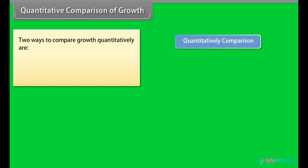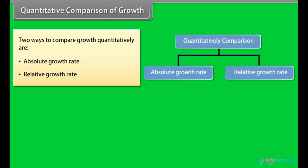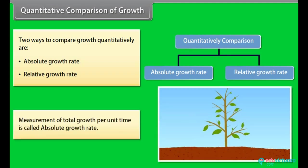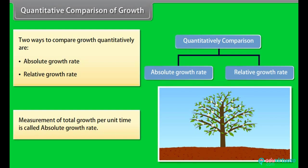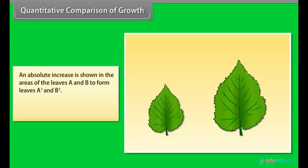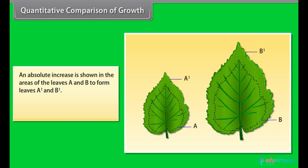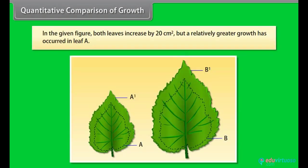Quantitative comparison of growth. Two ways to compare growth quantitatively are absolute growth rate and relative growth rate. Measurement of total growth per unit time is called absolute growth rate. An absolute increase is shown in the areas of the leaves A and B to form leaves A1 and B1. Growth of given system per unit time is called relative growth rate. In the given figure, both leaves increase by 20 cm2 but a relatively greater growth has occurred in leaf A.